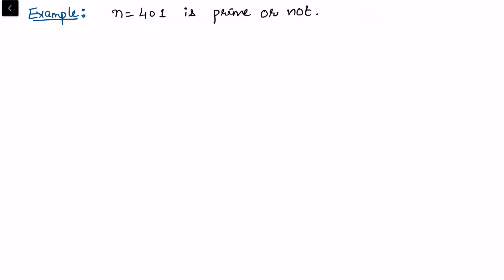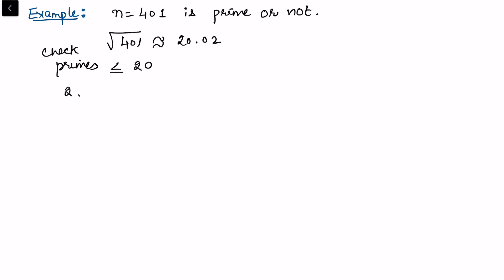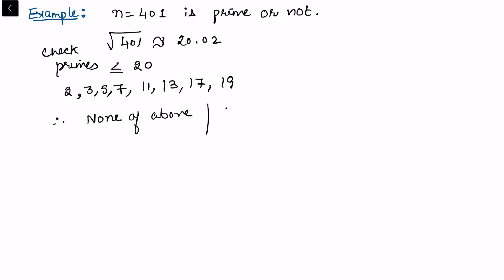One more example: n = 401 — is it prime? We note √401 ≈ 20.02, so check all primes less than or equal to 20: these are 2, 3, 5, 7, 11, 13, 17, and 19. We notice that none of the above divide 401, so we conclude that 401 is prime. This is how the trial method works for checking primality as well as finding factorization.